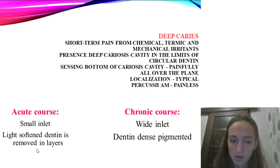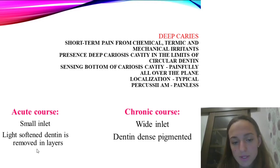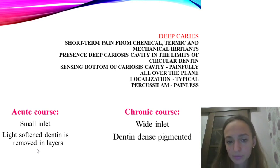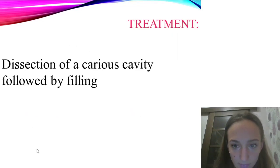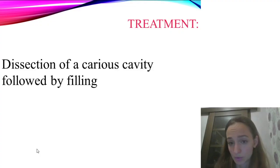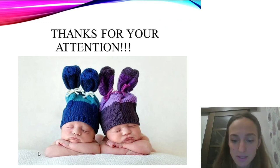Deep caries: acute course — small inlet; chronic course — white inlet, light softened dentine, and dense pigmented dentine. Treatment: dissection of the carious cavity followed by appropriate filling. Thank you for your attention; I am waiting for your synopses. Have a nice day.